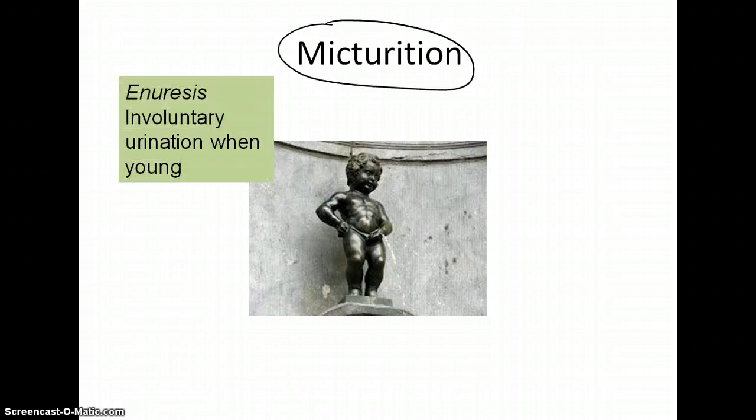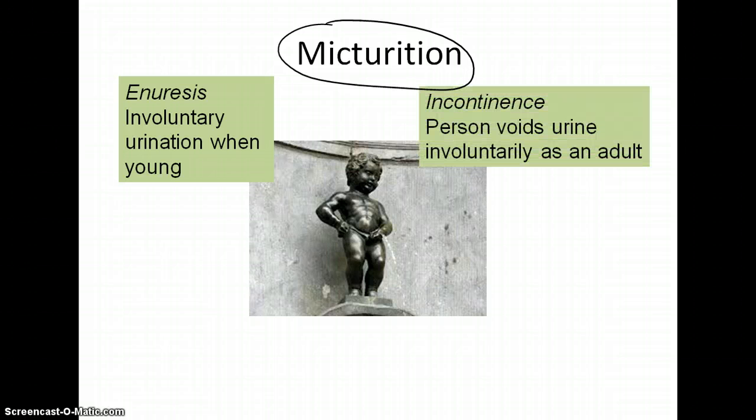Bedwetting, or involuntary urination, is called enuresis. The same can happen in adults because those muscles get weaker as we age and the innervation needed for micturition may become weakened. That same process in adults is given a different name called incontinence, but it's really the same thing.